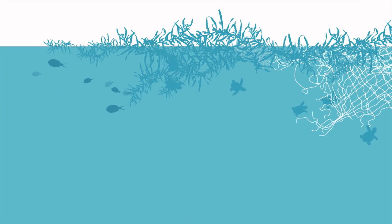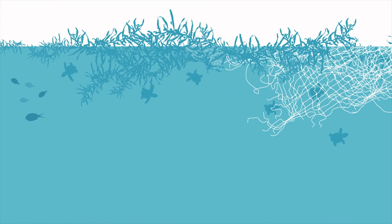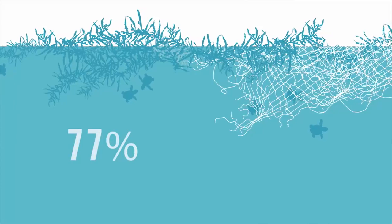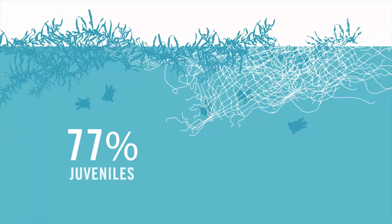Unfortunately, many mistake ghost nets for algae and become entangled. In its first year, 77% of turtles recorded by the Olive Ridley Project were juveniles.